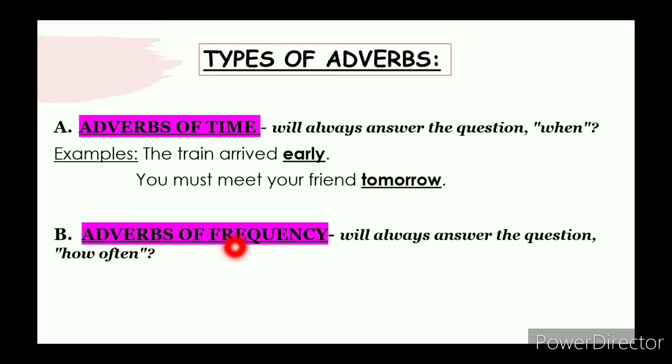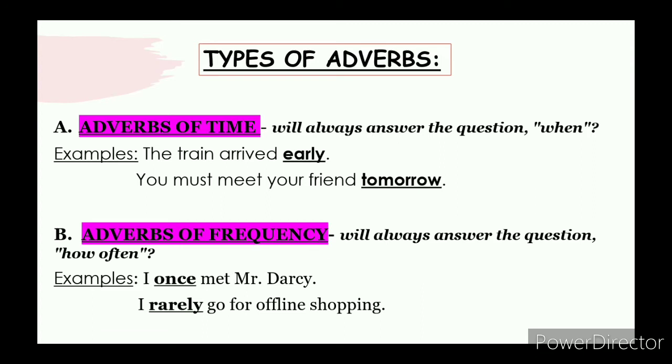Second is adverbs of frequency. It will always answer the question how often. Because frequency means how many times something happens in a particular interval. For example, if you eat food four times a day, that's your frequency of eating. Example is: I once met Mr. Darcy. So once is telling you frequency. It is an adverb of frequency. I rarely go for offline shopping. So rarely is an adverb of frequency.